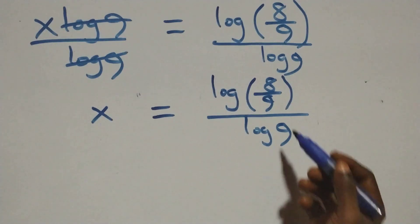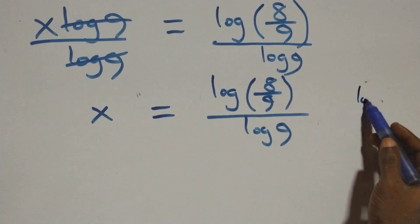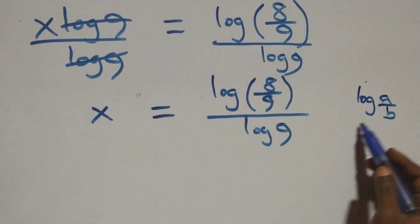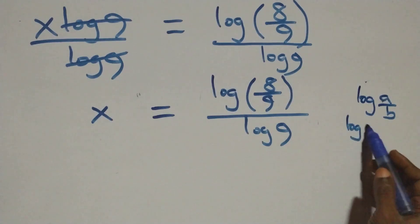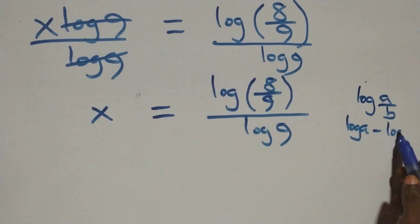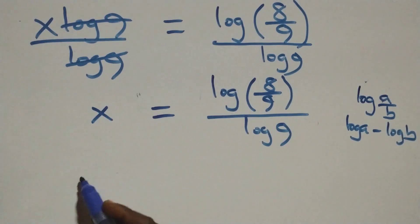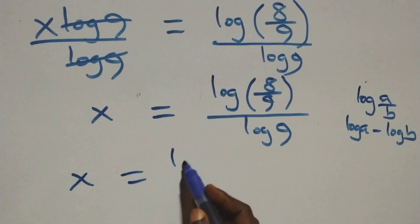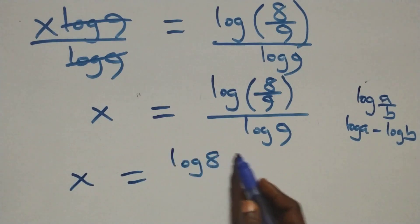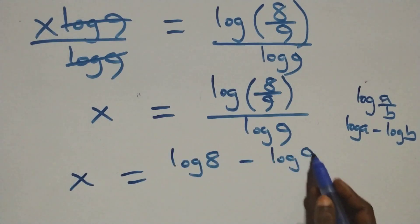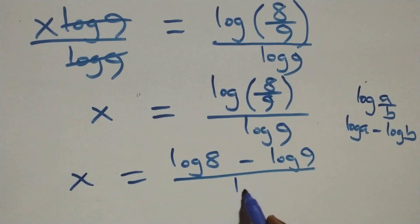Next step here, this follows where we have log(a over b), which is the same thing as log a minus log b. So what we have here becomes x equals log 8 minus log 9, all over log 9.